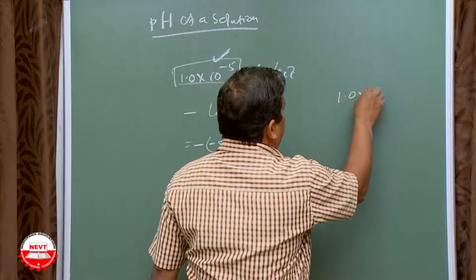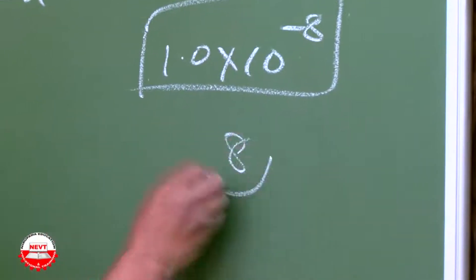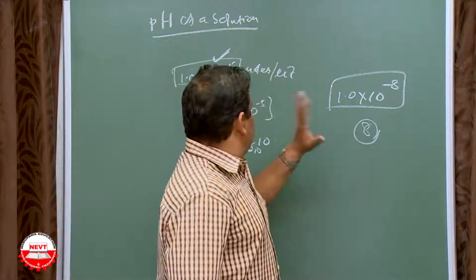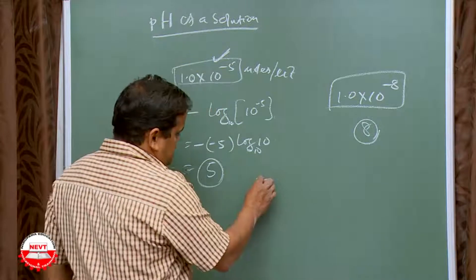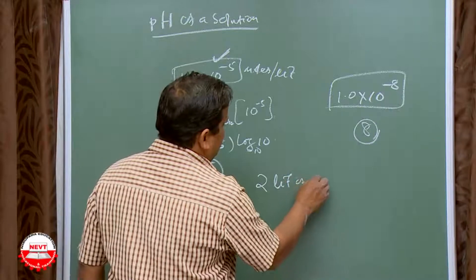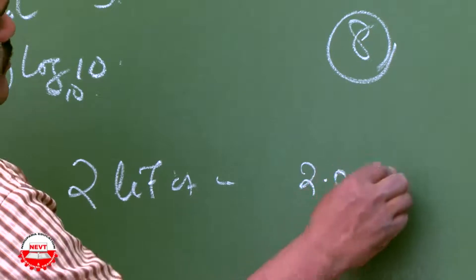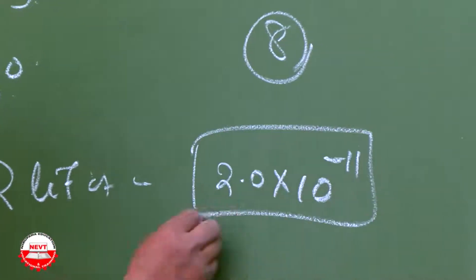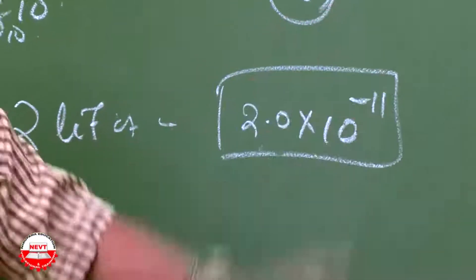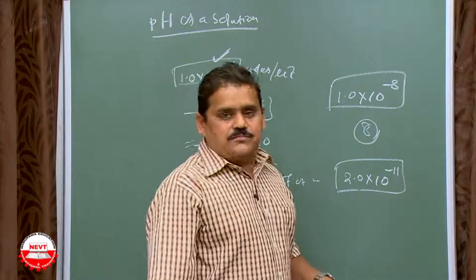For 1.0 × 10⁻⁸ moles per liter, the pH is 8. Another example: if in 2 liters of water the concentration of hydronium ion is 2.0 × 10⁻¹¹, then in 1 liter it is 10⁻¹¹, so the pH is 11. This is how you calculate the pH of any solution.